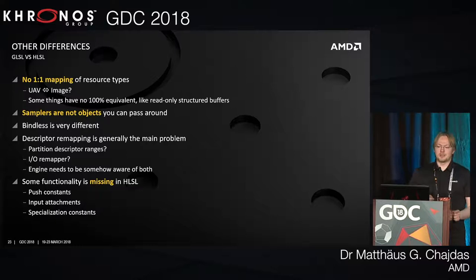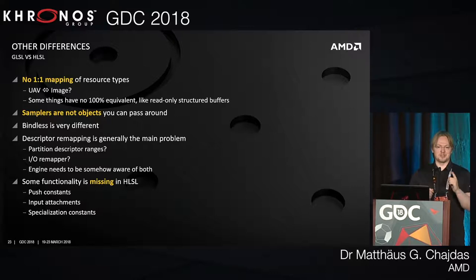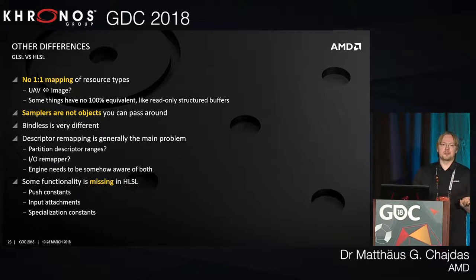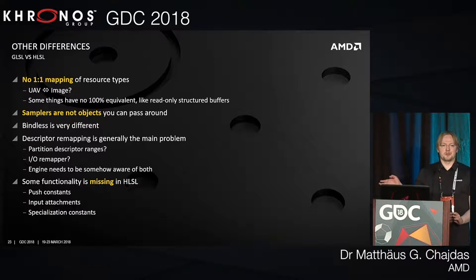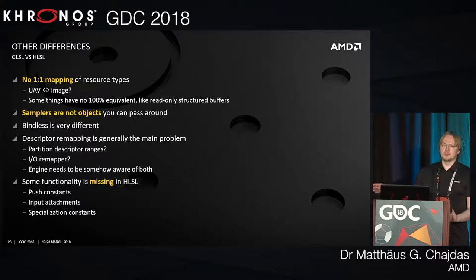That's not the only problem. In GLSL versus HLSL, some resource types don't really map. Sometimes it's just naming things that confuses people — why is an image a UAV, why do I need a structured storage buffer? Some things have no equivalent: you can't have a read-only structured buffer because it's always read-writable from the API side. As we saw in Greg's talk about legalization, some things are opaque objects you can't pass around. Bindless is very different too. From my experience with a couple of games so far, descriptor remapping is the main issue — people subdivide ranges and do all sorts of creative things.